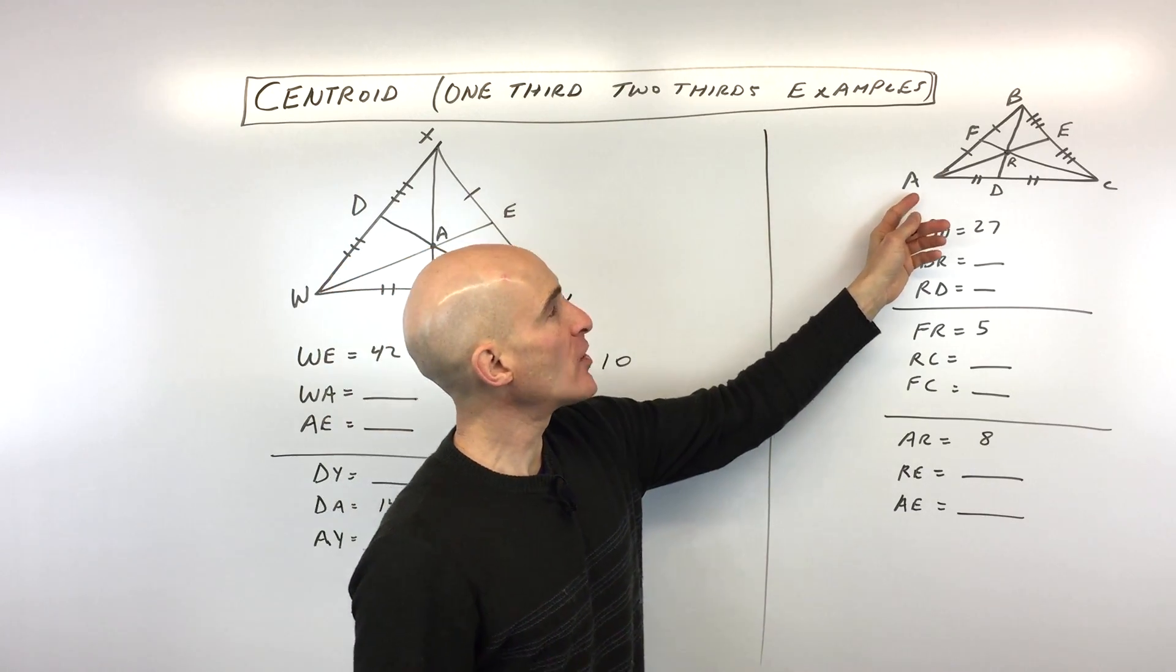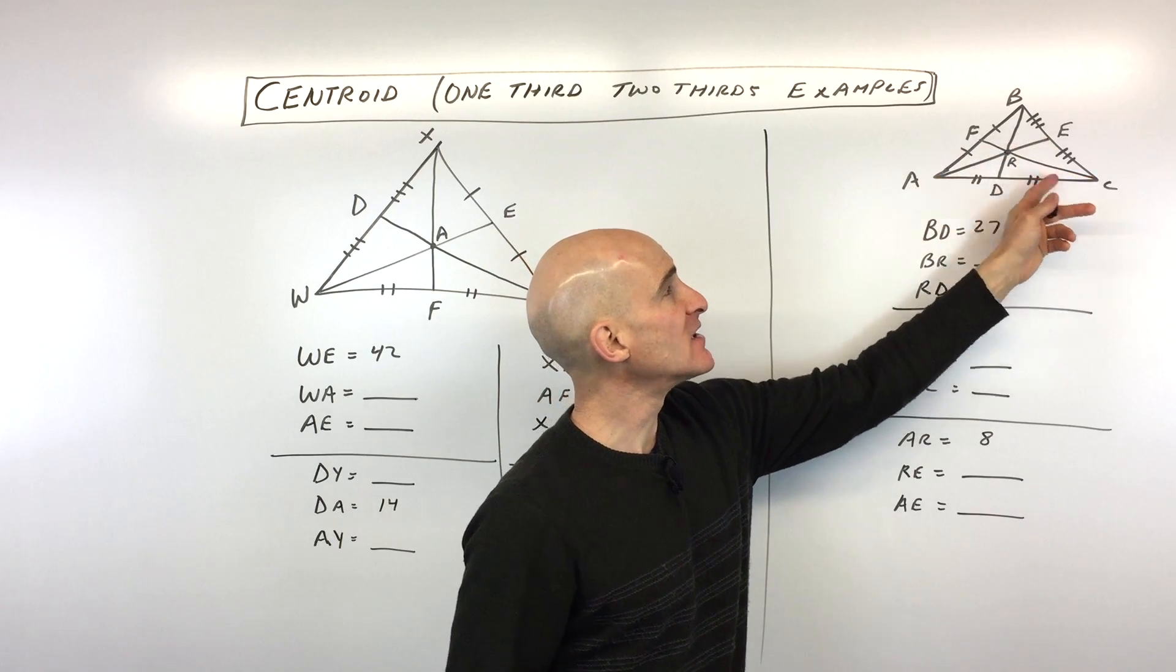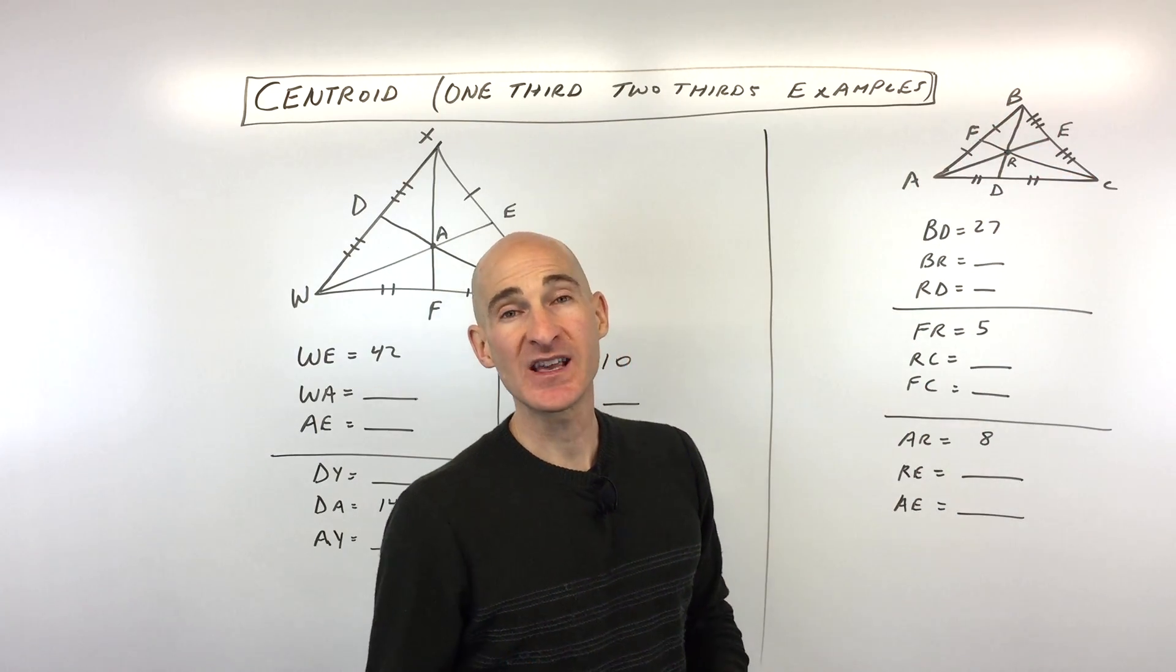What exactly is a centroid? Well, centroid is the point of concurrency where the three medians in a triangle coincide or intersect.